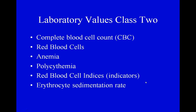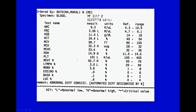Today we're going to talk about complete blood cell counts, mainly red blood cells. We'll look at a condition called anemia, a condition called polycythemia, and we'll talk about those red blood cell indices. The last thing I'll cover is the erythrocyte sedimentation rate. When you're done listening to this lecture, you should know more about these items. We're going to focus on red blood cells — here's a lab report that uses H's and L's and asterisks if it's a panic or critical value. We have a low red blood cell count, and that term is anemia.